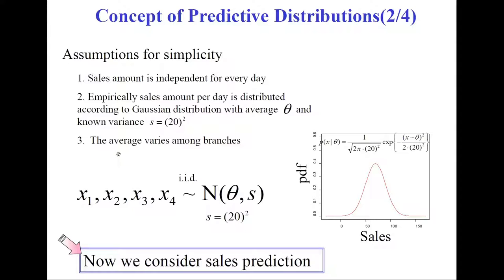Finally, the parameter theta varies among branches. In other words, the sales average depends on each convenience shop, which is very natural. So we write the formula: observations of sales amount X1 to X4 are distributed according to the normal distribution with unknown parameter theta and known variance S.